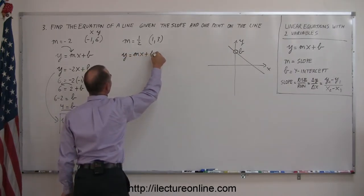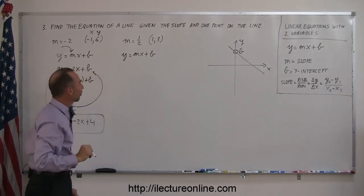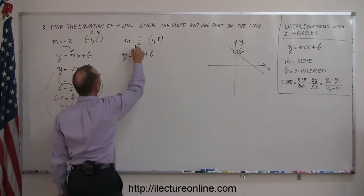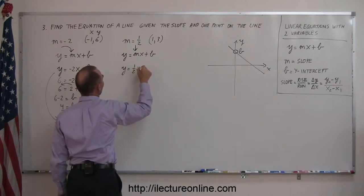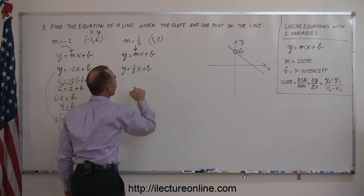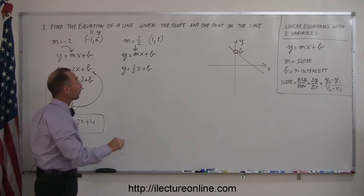Then you realize, aha, they already gave me the slope, I can simply plug that in for m, so now we have y equals 1 half x plus b, and the only thing left to do to find b is to take the point that you were given.